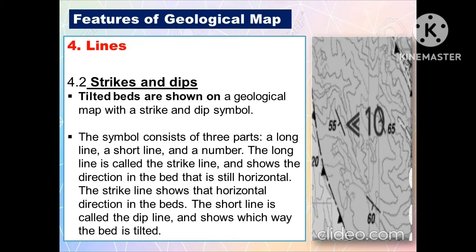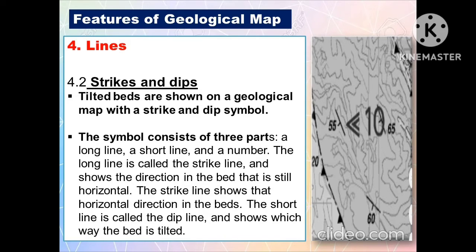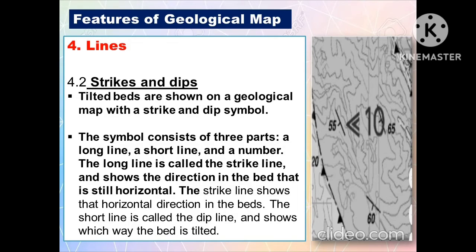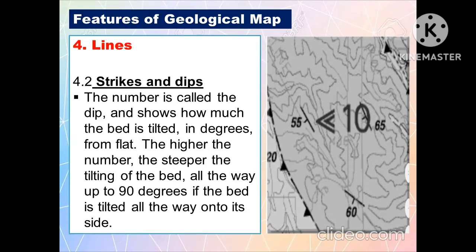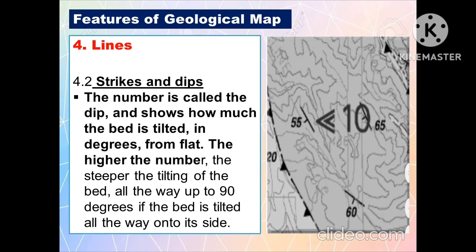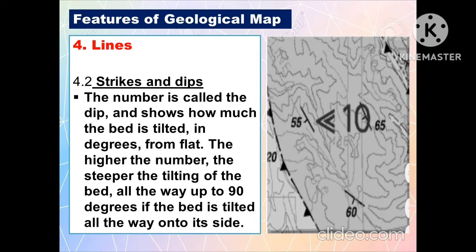Another feature of geological maps under lines is the strikes and dips. Tilted beds are shown on the geologic map with a strike and dip symbol. The symbol consists of three parts: a long line, a short line, and a number. The long line is called the strike line and shows the direction in the bed that is still horizontal. The short line is called the dip line and shows which direction the bed is tilted. The number is called the dip and shows how much the bed is tilted in degrees from flat. The higher the number, the steeper the tilting of the bed, all the way up to 90 degrees if the bed is tilted completely on its side.